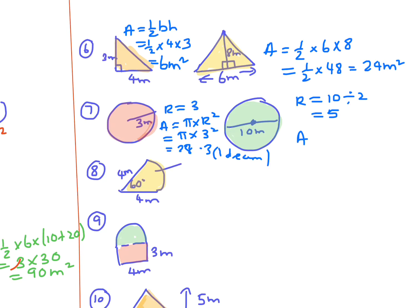For this circle, the area is pi times the radius squared, and the radius is 5, so it's pi times 5 squared, which equals 78.5 meters squared.